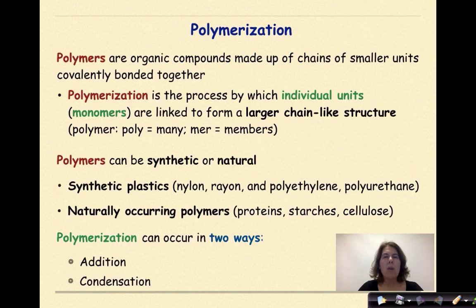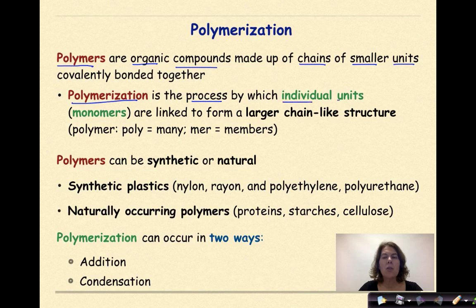Let's start by talking about polymerization. Polymers are organic compounds made up of chains of smaller units covalently bonded together. Polymerization is the process by which individual units, known as monomers, are linked to form a larger chain-like structure, known as a polymer. Poly meaning many, mer meaning members — so many members.